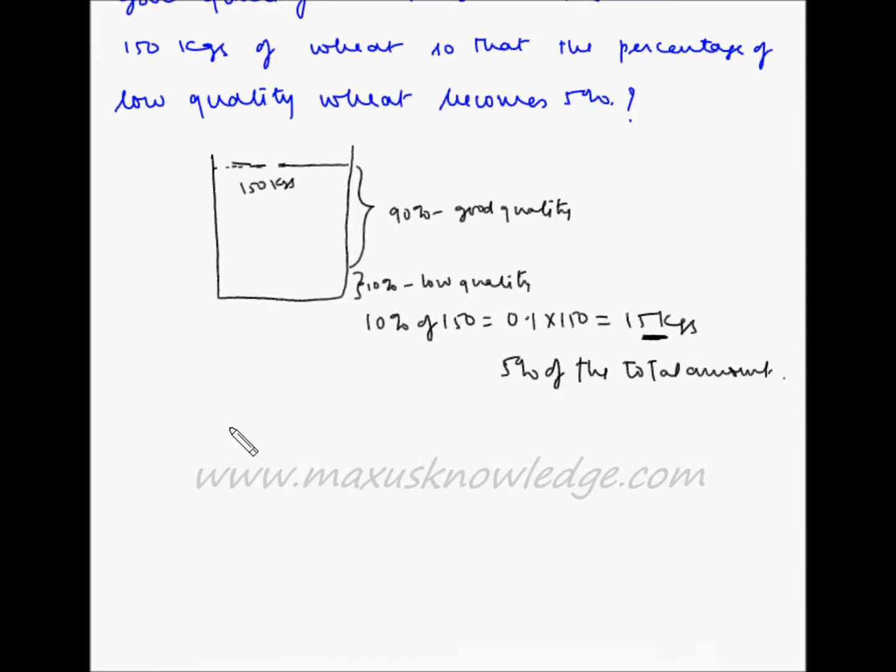So basically 5% of the total quantity of wheat, let's say it is x, is equal to 15. Or 5% of x means 0.05 times x is equal to 15, or x is equal to 15 divided by 0.05.